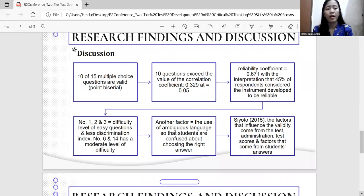Discussion. 10 of 15 multiple choice questions are valid with 0.329 at alpha 0.05. Reliability coefficient 0.671 with the interpretation that 45% of respondents considered the instrument developed to be reliable.